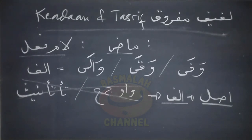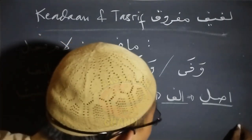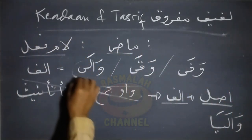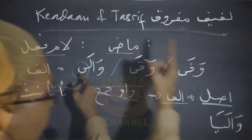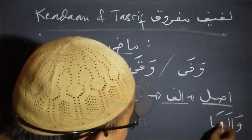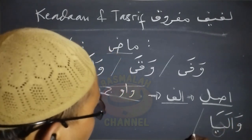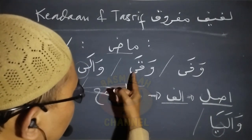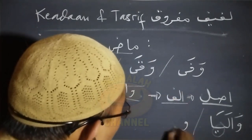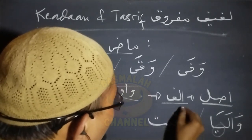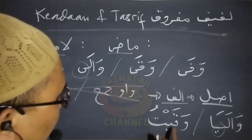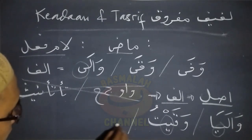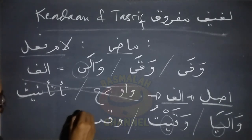Contohnya manakala bersambung dengan alif tathniah, lafad wala maka akan menjadi walaya, karena alif yang ada pada lafad wala ini asalnya adalah berupa huruf ilat ya, maka di sini dikembalikan bentuk asalnya menjadi huruf ilat ya. Atau lafad waqo ketika bersambung dengan damir rafa' mutaharrik maka bentuk daripada alif ini dikembalikan pada bentuk asalnya, maka menjadi waqaitu. Di sini huruf alifnya berubah bentuknya menjadi bentuk asalnya yaitu berupa huruf ilat ya. Atau damir yang lain menjadi waqaitum.